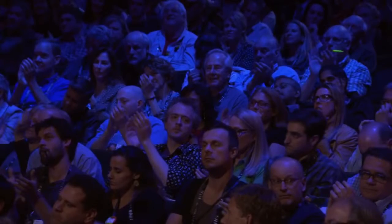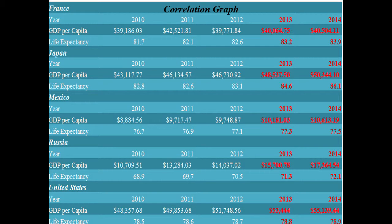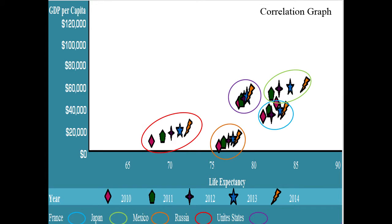I performed a linear regression and predicted the GDP per capita and therefore the life expectancy of these countries. This graph shows the line trending upward — a positive slope — meaning that as GDP rises, life expectancy rises as well. Here are those major countries I addressed in my hypothesis: France, Japan, Mexico, Russia, and the United States. That is an example of a linear regression.